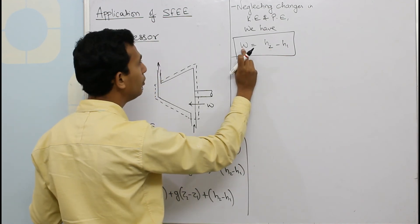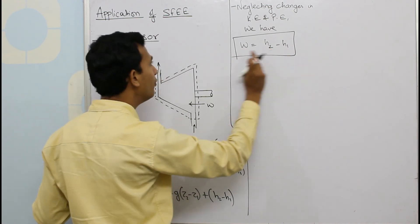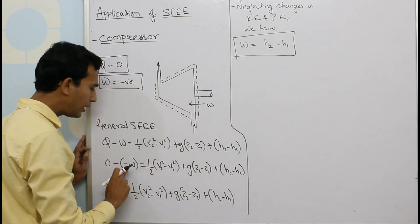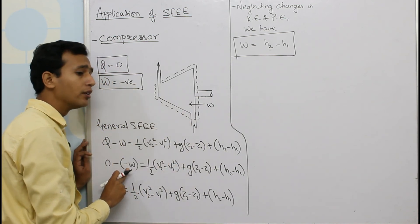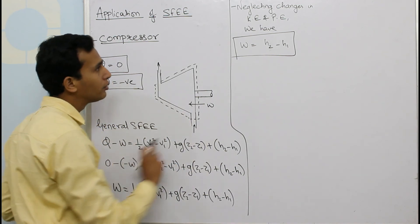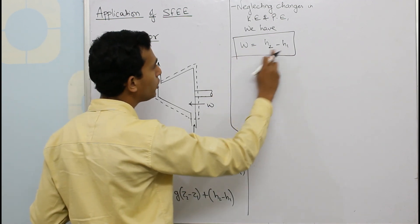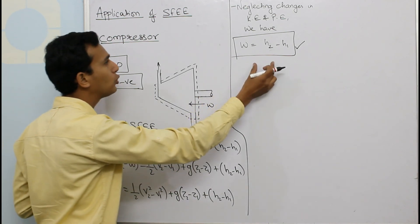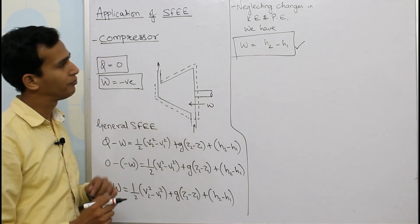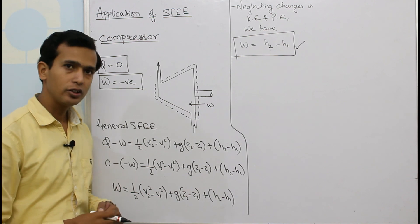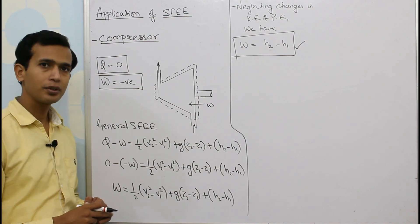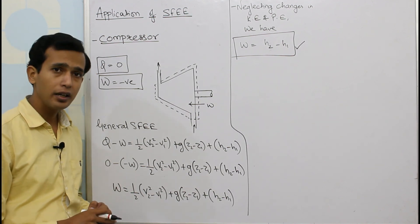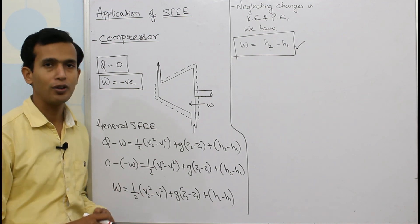So here W equals H2 minus H1. We have already substituted the negative sign because the work is being supplied, so here W equals H2 minus H1 is the equation for a compressor. This is the steady flow energy equation for this device. Hope you have enjoyed this video. Please like and subscribe to our channel and stay connected with us. Thank you for watching this video.